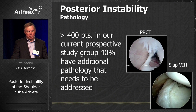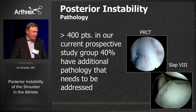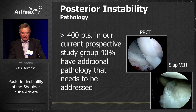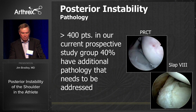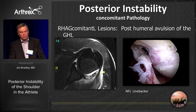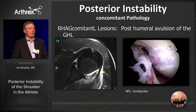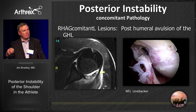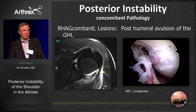We have over 400 patients in our current prospective study group already operated on, and over 40% have some additional pathology that needs to be addressed — partial cuff tear above, or a SLAP type 8 lesion with a peel-back. Be prepared. These reverse Hagl lesions are important — the radiologist is not going to read it, you're going to read it. Here's the MRI of the linebacker and the arthroscopic appearance. If you're not prepared ahead of time, you'll be caught by surprise. Arthroscopically this is really easy to fix — easier than anteriors, which I have to open.